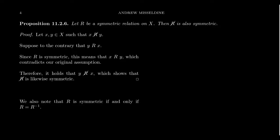It turns out a relation is symmetric if and only if it equals its inverse. The inverse reverses the order of ordered pairs — if reversing all ordered pairs gives back the exact same relation, that's exactly what it means for a relation to be symmetric. So far we've introduced reflexive and its opposite irreflexive, symmetric and its opposite anti-symmetric. There is one last property to introduce: transitivity.